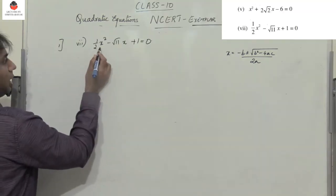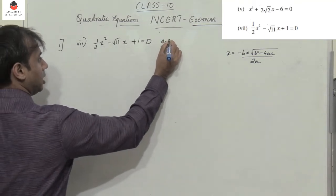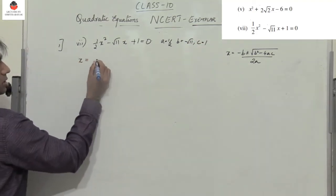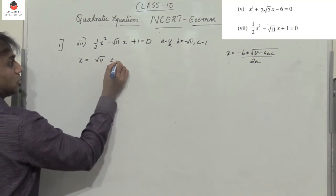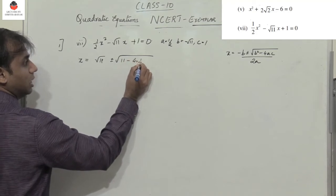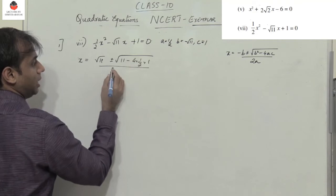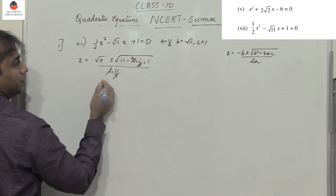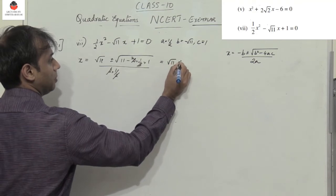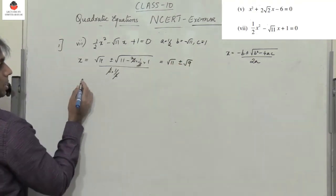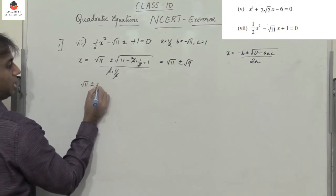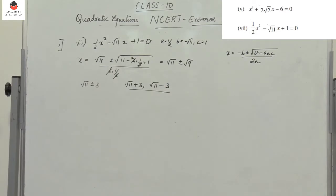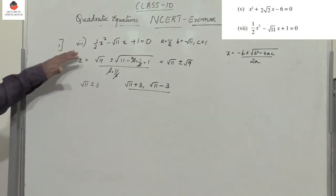Seventh equation: half x² minus √11 x plus 1 equals 0, so a is 1/2, b is minus √11, c is 1. Using the formula: x equals √11 plus or minus root of b² — which is 11 — minus 4 into 1/2 into 1, divided by 2 into 1/2. The 2s cancel, and 11 minus 2 is 9, giving root 11 plus or minus root 9. So the two roots are √11 plus 3 and √11 minus 3. This completes Question 1 with all seven equations solved using the quadratic formula.